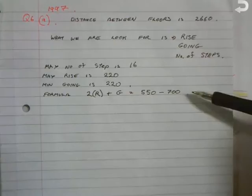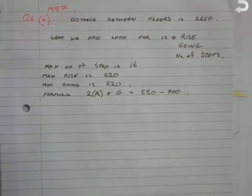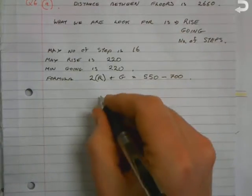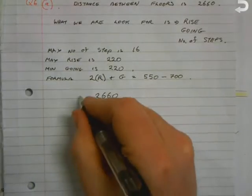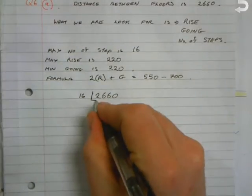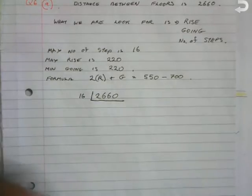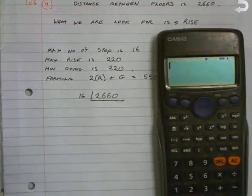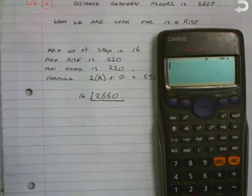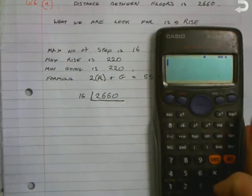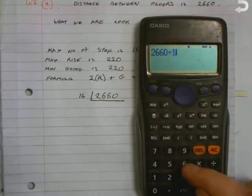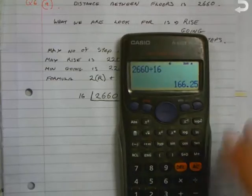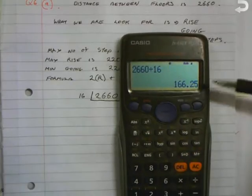So when we put in our answers and put it into this formula, it must fit within this range. Now to start off this question, we look at the first measurement we're given, 2660, and we're going to divide it by 16. When we divide it by 16, we're getting the rise of each of the 16 steps. If we put it into our calculator, 2660 divide by 16, the answer we're getting is 166.25.